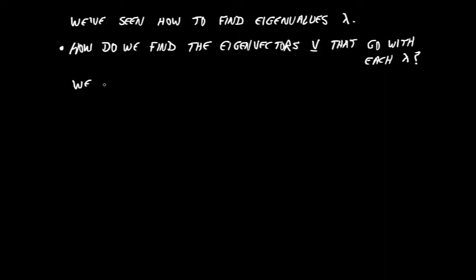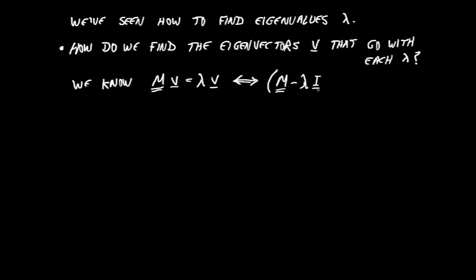Our fundamental equation is that when matrix M multiplies an eigenvector V, it gives us back that V scaled by lambda. Another way to write that is that M minus lambda times the identity, multiplied by V, is equal to the zero vector. Now that we have our lambda values, we just need to look at one of these equations and figure out an acceptable vector.